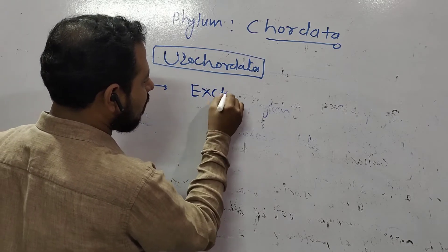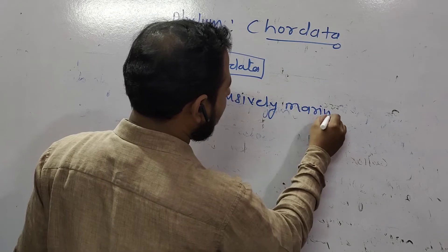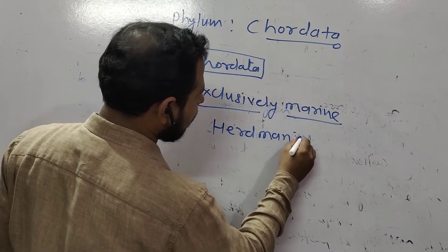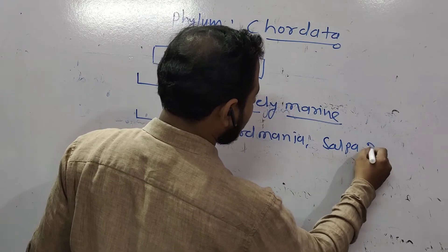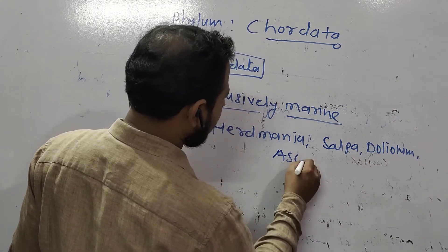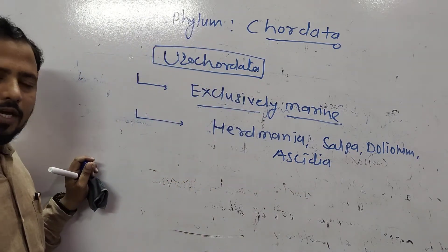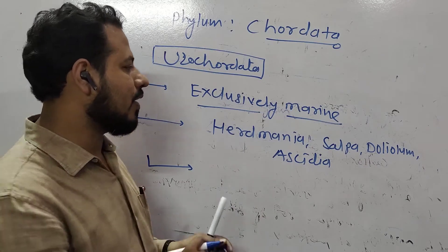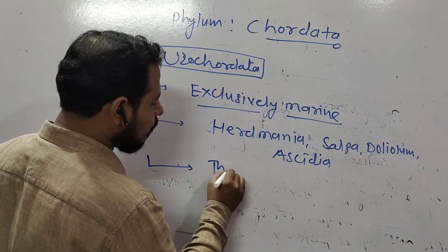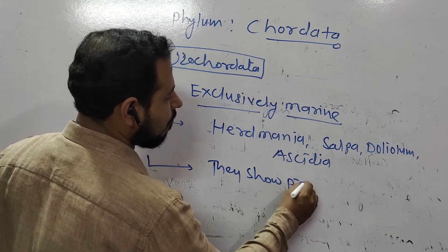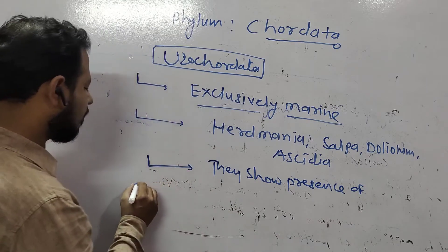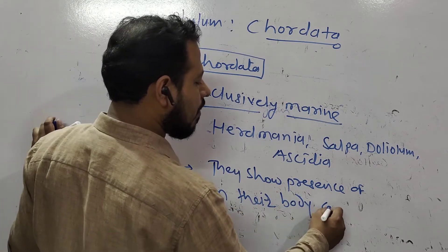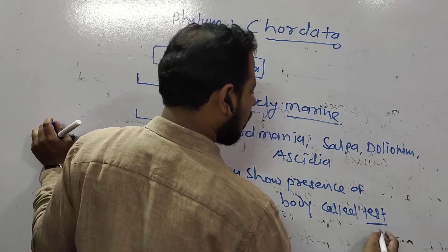Urochordata animals are exclusively marine animals. Important members include Herdmania, Salpa, Doliolum, and Ascidia. These animals are found only in marine water.